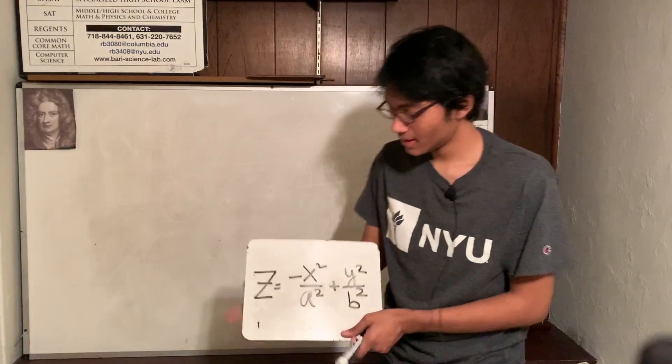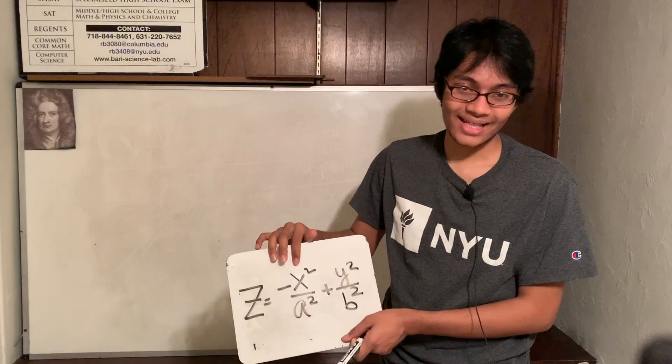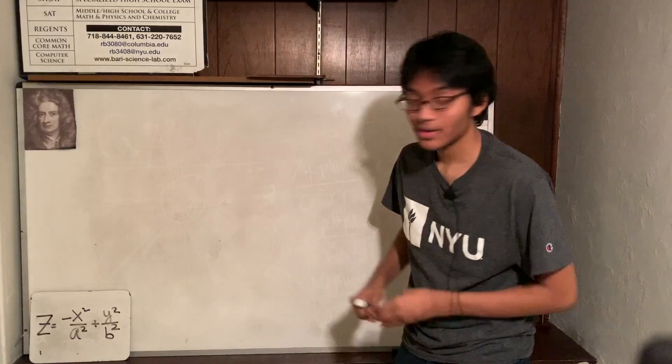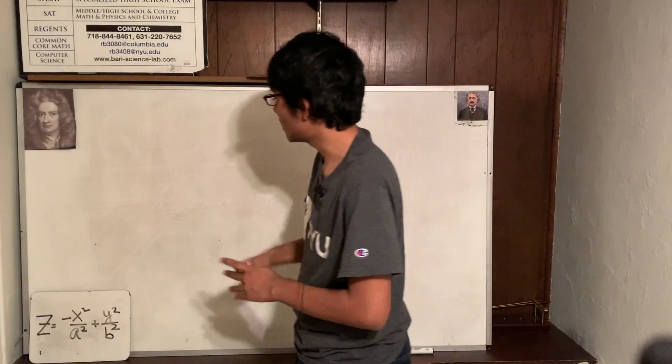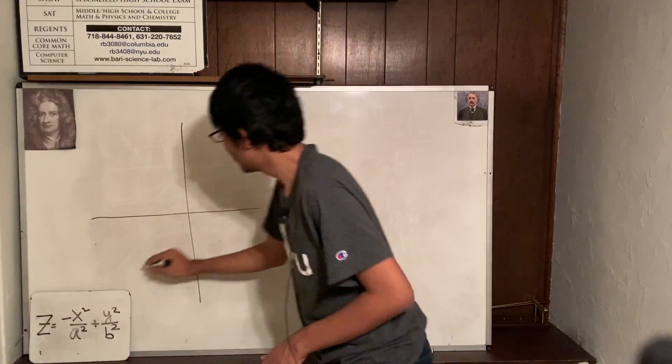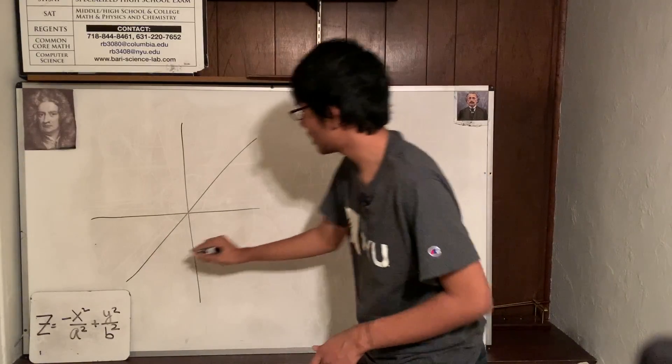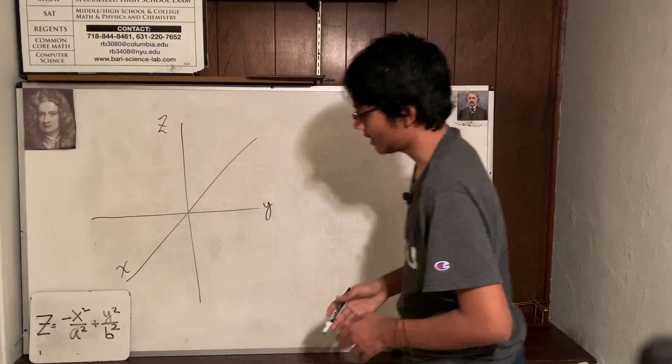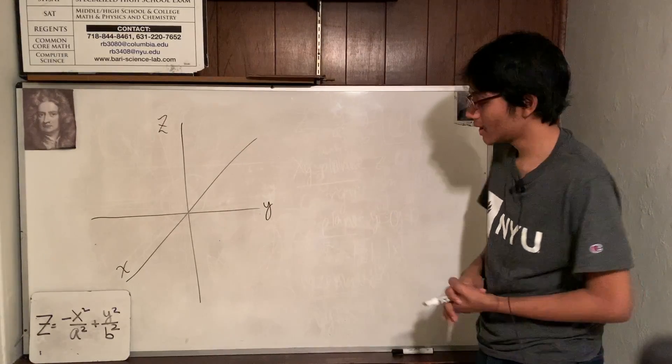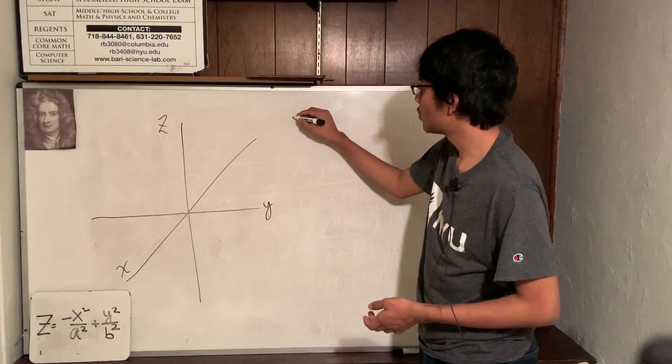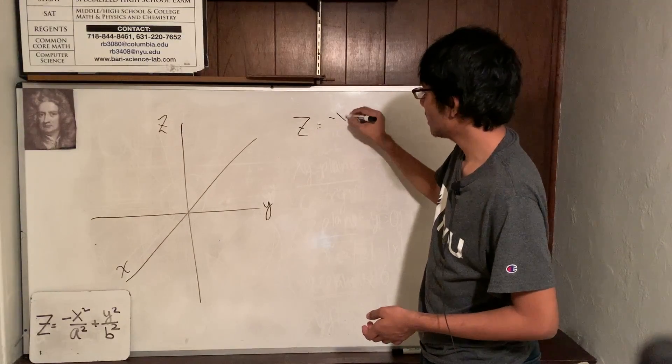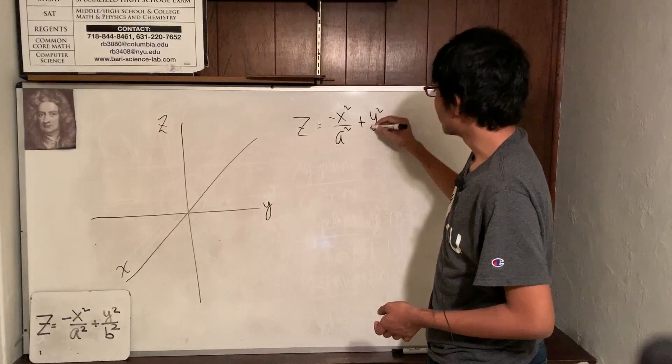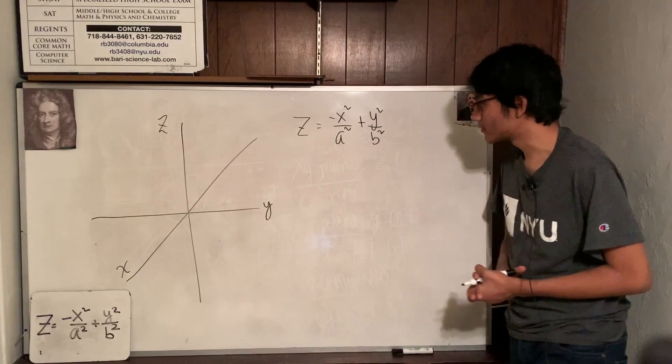We have this surface: z equals minus x squared over a squared plus y squared over b squared. So first thing we've got to do, draw the x, y, z axis. Here it is - z, y, x. So I'm going to have this be my x axis, this be my y axis, this be my z axis. Let's go ahead and rewrite our equation over here. So z equals negative x squared over a squared plus y squared over b squared.